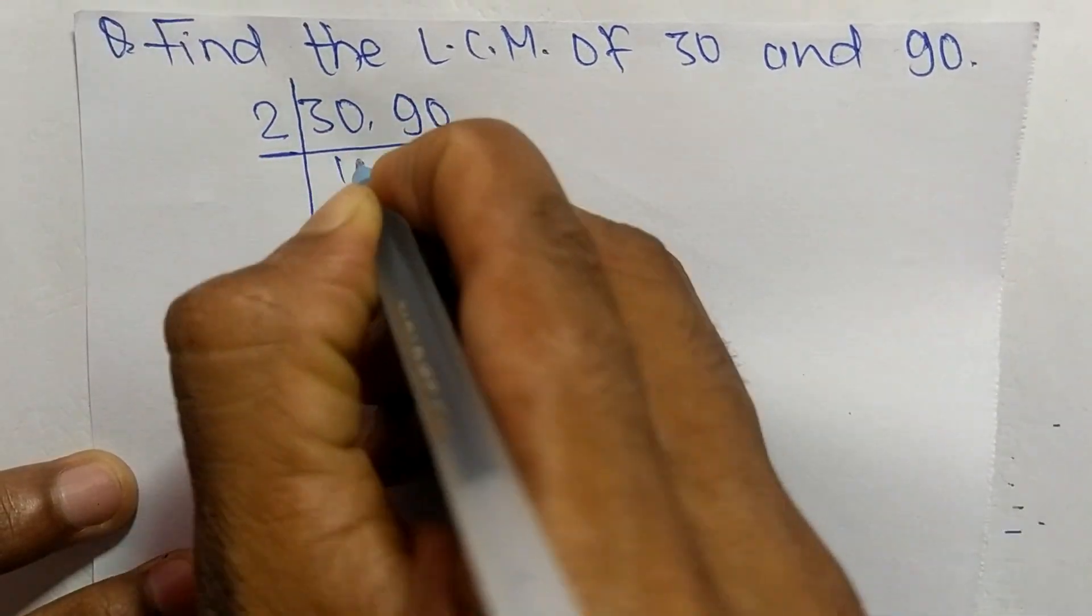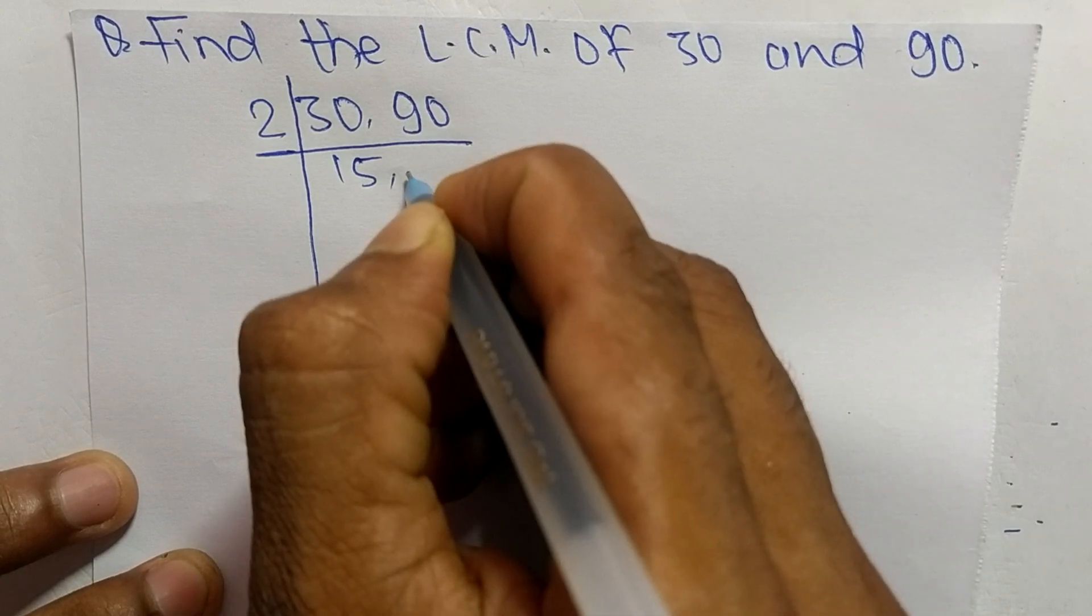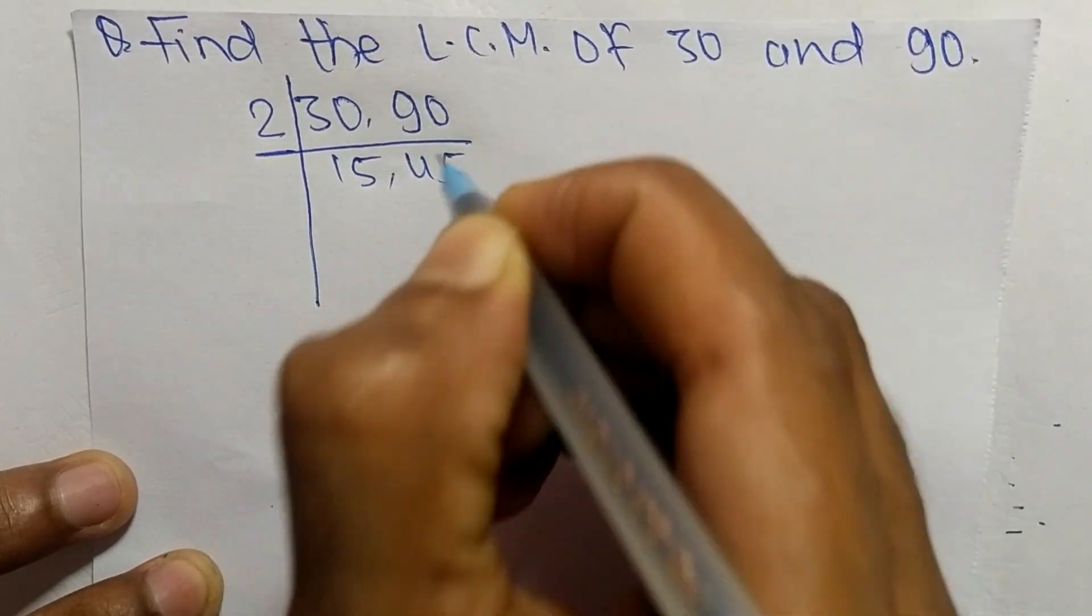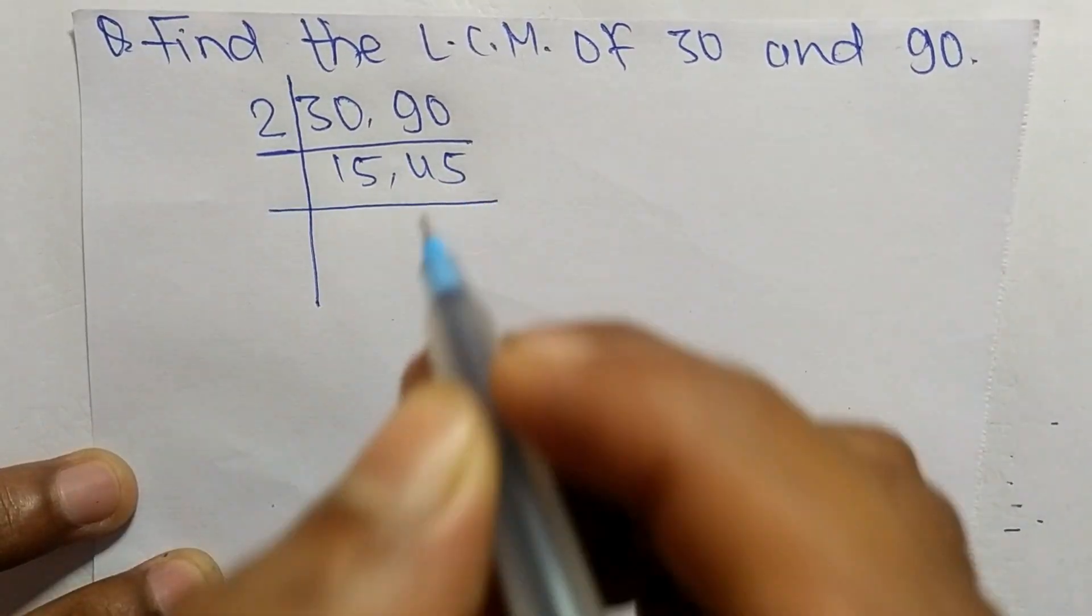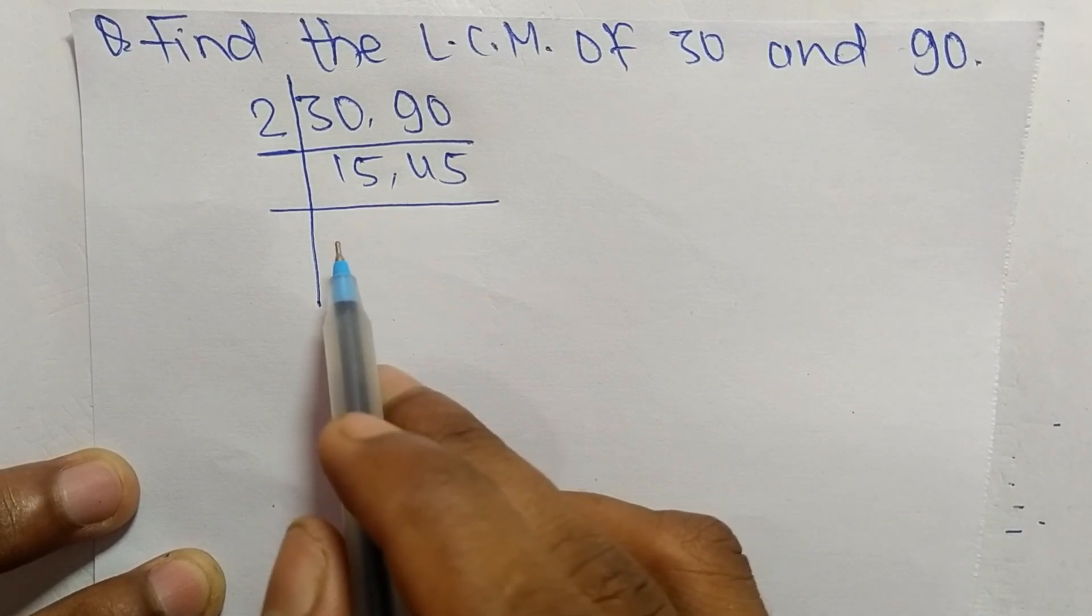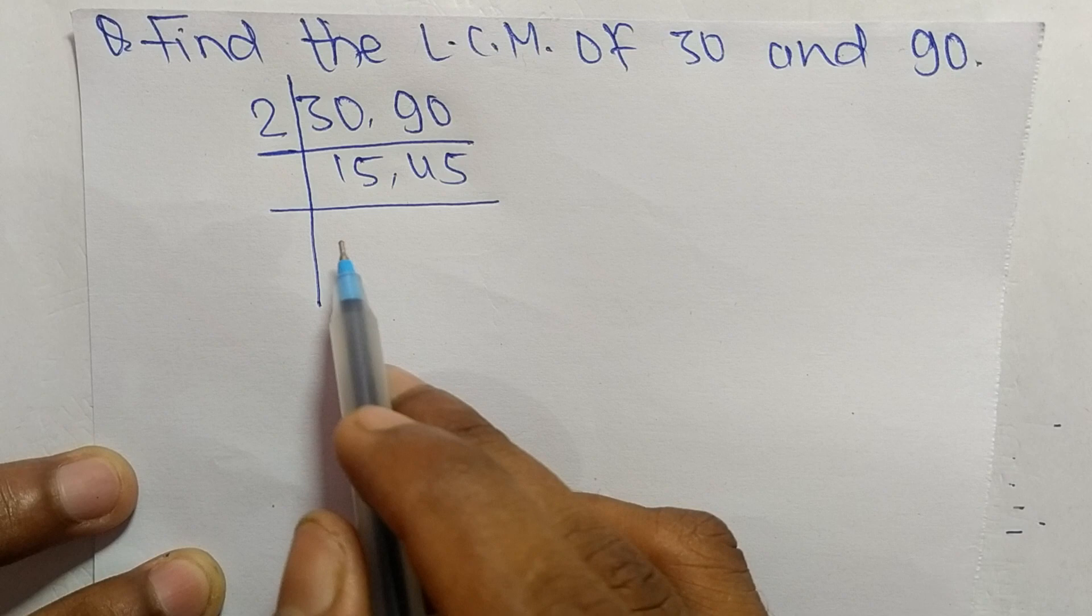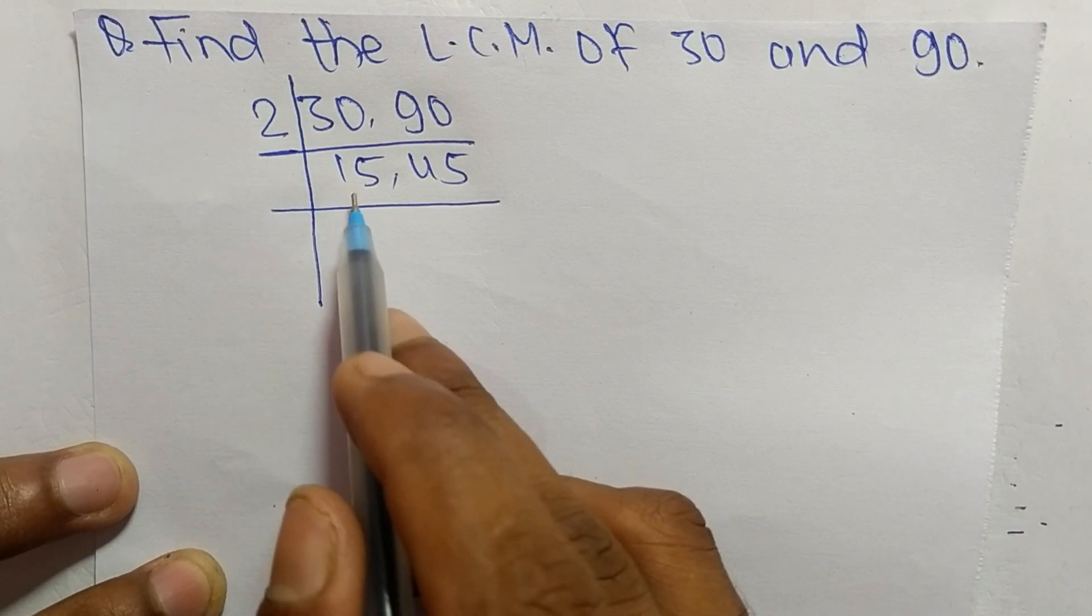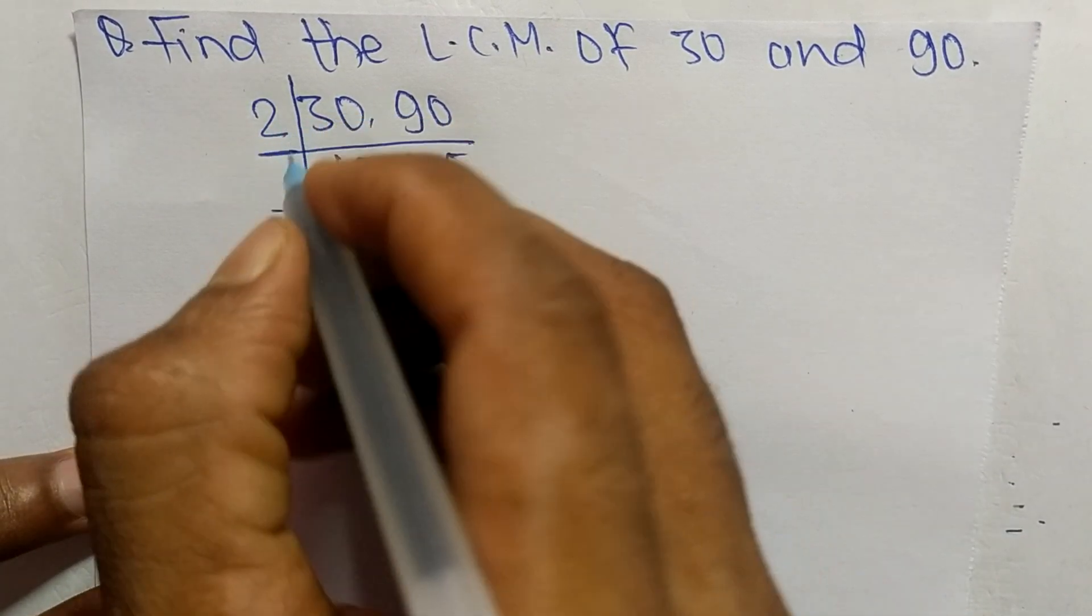The number we choose is 2. So 2 times 15 means 30, and 2 times 45 means 90. Now 2 can't exactly divide 15 and 45, so we choose the number greater than 2 which can divide 15 and 45.